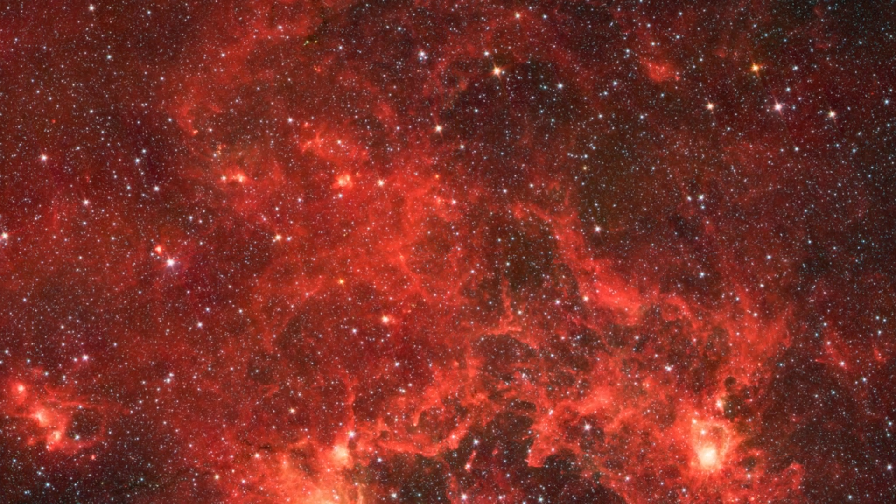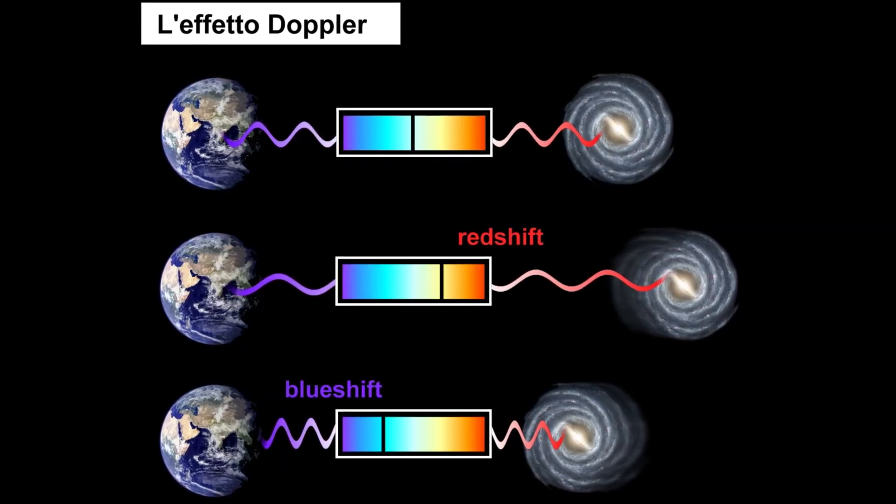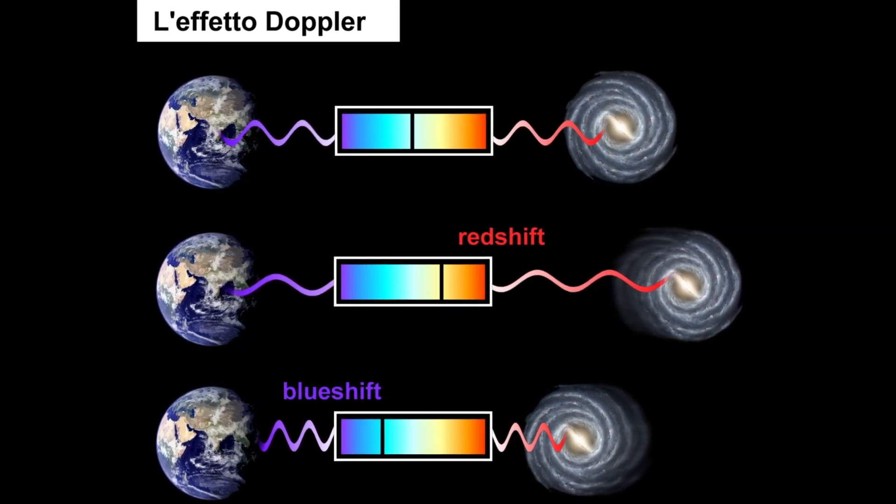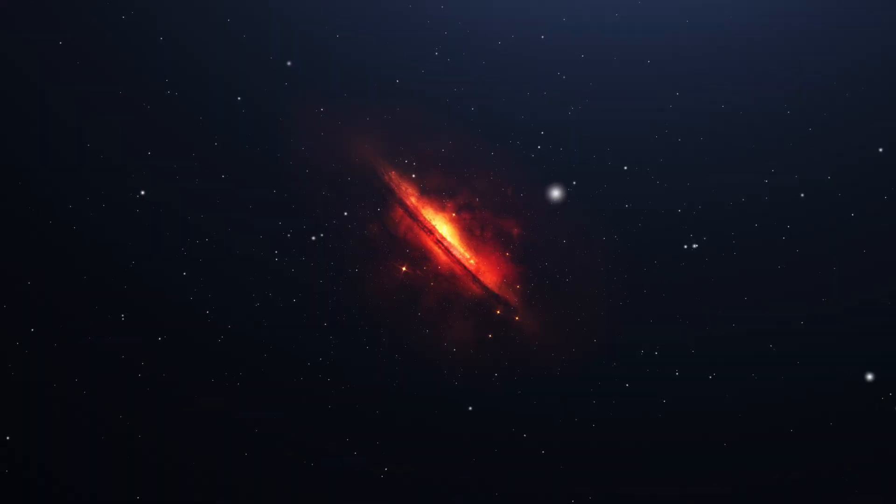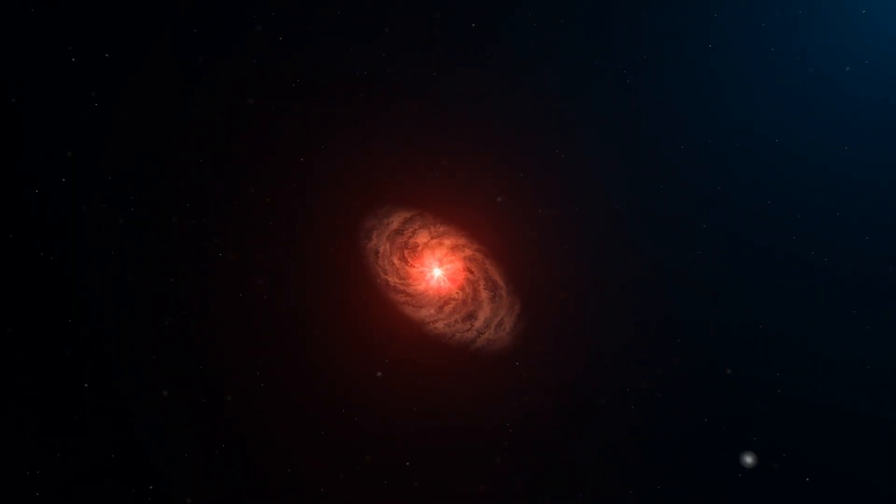Redshift is explained by the Doppler effect, which shows that the wavelength of light changes depending on the speed of the light source. Since more distant galaxies appear redder, it was suggested that they are moving away at a greater speed.